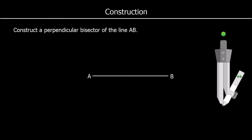This question says construct a perpendicular bisector of the line AB. Perpendicular means it's going to cross at 90 degrees — it's going to make a right angle with the line AB as it goes through it. Bisector means split in half, so it's going to be exactly in the middle of A and B. We want a perpendicular line exactly in the middle of A and B.